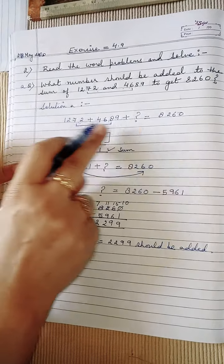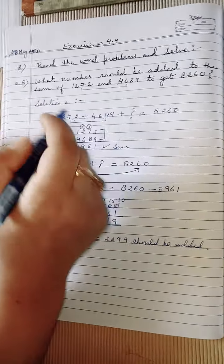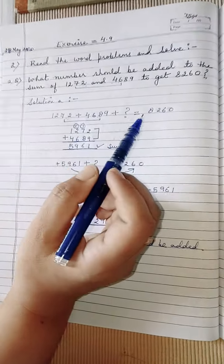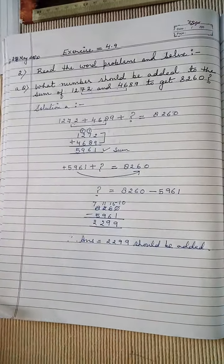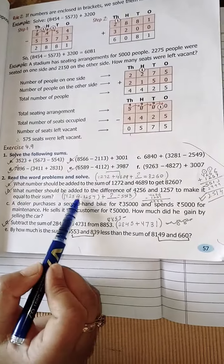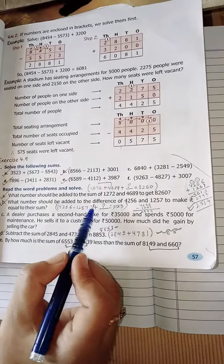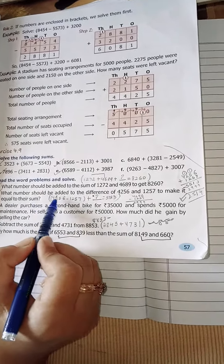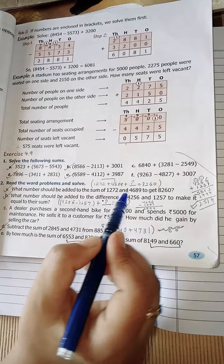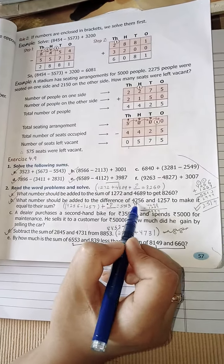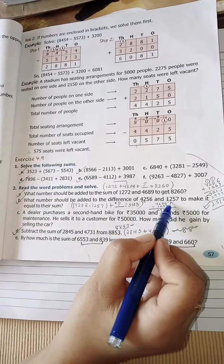Children, these questions are done in this manner. You need to frame the equations for them. According to the question, whatever it is saying, you frame the equation accordingly. Now if you see question number B: 'What number should be added to the difference?' Difference means subtraction, and the difference is the answer you get after subtraction.